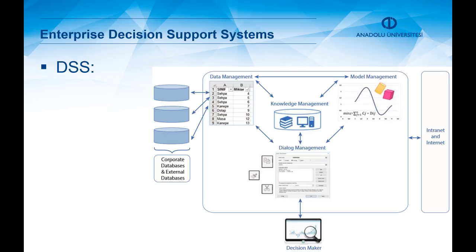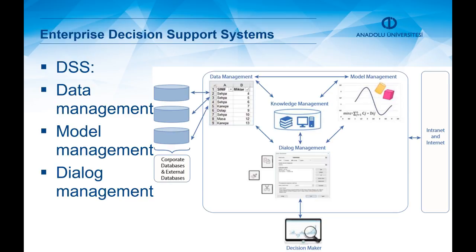A decision support system can be defined as an interactive business information system which helps decision makers utilize data and models in handling decision problems. Its components include a data management module, a model management module or subsystem, a dialogue management module or subsystem, and a knowledge management subsystem. Data management deals with data provision for the decision maker.